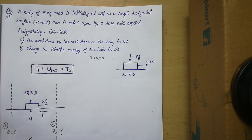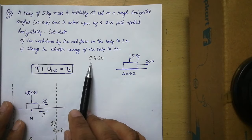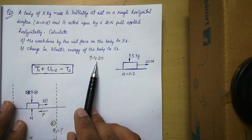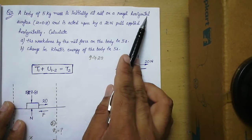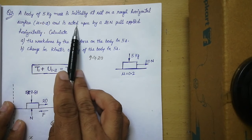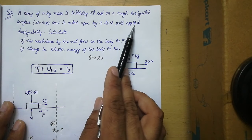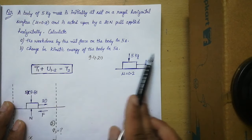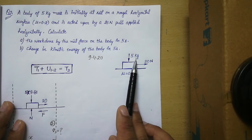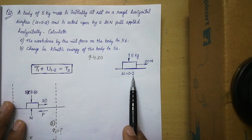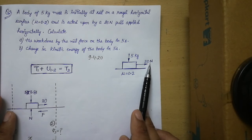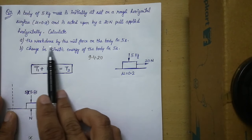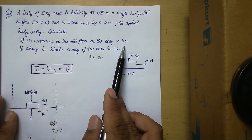Hello students, today I will talk about the fourth problem of the topic Kinetics of Particles: Energy and Momentum Method. I have already shared one file with you, 9.4.20, and this is the second numerical of that file. The problem states: a body of 5 kilogram mass is initially at rest on a horizontal surface, mu equals 0.2, and is acted upon by a 20 Newton pull applied horizontally. We are asked to calculate the work done by the net force on the body in 5 seconds.